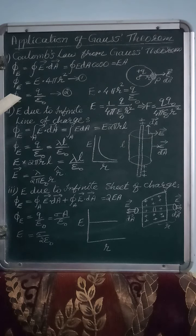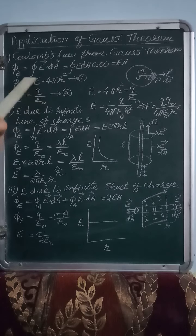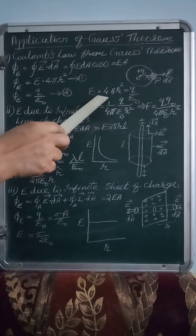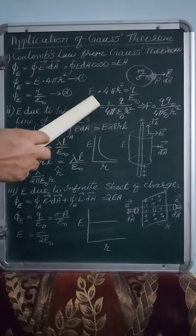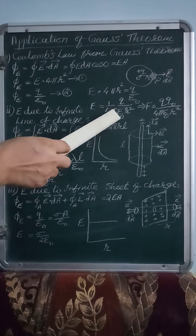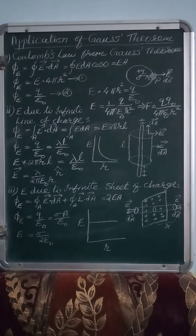Let that be the first equation. The next equation for Φ_E from Gauss theorem is Q/ε₀. Equating these two equations, we get E·4πr² = Q/ε₀. From that, E = (1/4πε₀)·(Q/r²). This is the formula we are getting for the electric field.